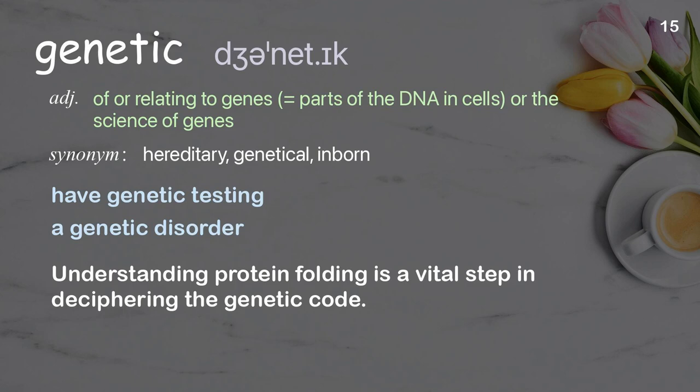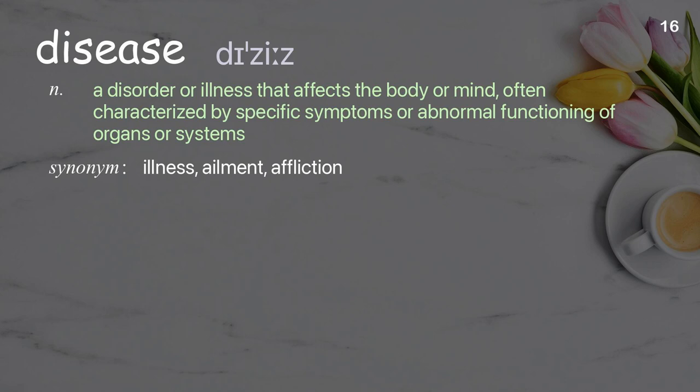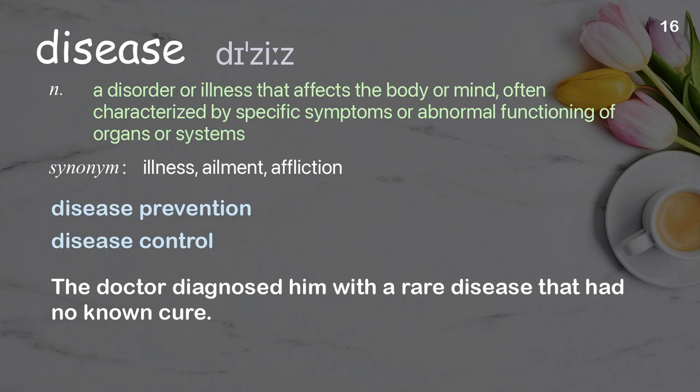Disease: a disorder or illness that affects the body or mind, often characterized by specific symptoms or abnormal functioning of organs or systems. Examples: disease prevention, disease control. The doctor diagnosed him with a rare disease that had no known cure.